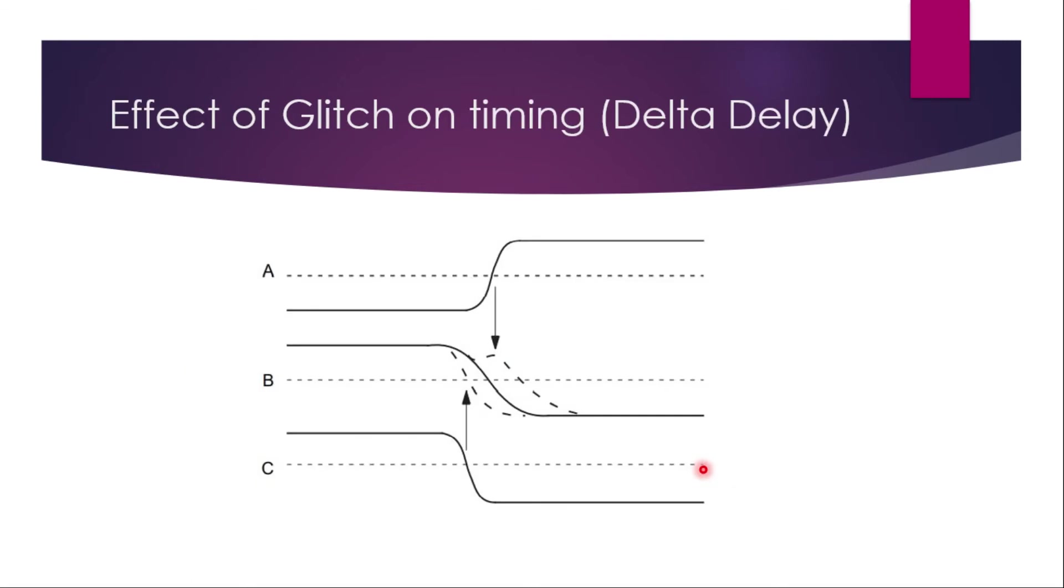Effect of glitch on timing. Glitch will create problems in timing, definitely. If you consider net B, it's a net of low frequency or medium frequency. And there is net A, which is of high frequency. The transition time is a little higher than this transition time. And there is net C again, whose transition time is faster as compared to this net, but it is switching before this net and it is switching from high to low.